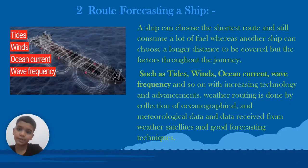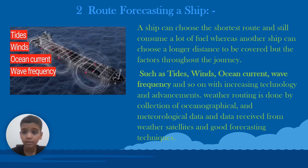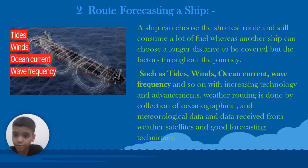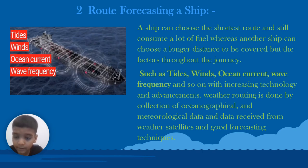Route Forecasting: A ship can choose the shortest route and still consume a lot of fuel, whereas another ship can choose longer distances to benefit from factors throughout the journey such as tides, winds, ocean currents, and wave frequency, with increasing technology and advancements. Weather Routing is done by collection of oceanographical and meteorological data.